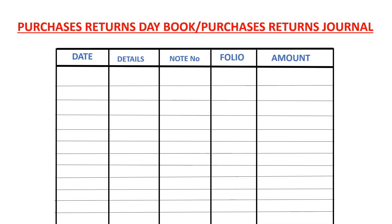A notable thing to explain is the source document we use when posting transactions in the purchases returns day book. Here is the narrative: you own a business, you go to your supplier and get goods on credit. Because they've given you goods on credit, they become a creditor — a liability to the business. You open the supplier's account, and because they are a liability, you credit their account.